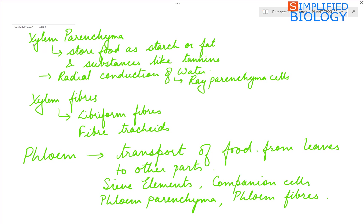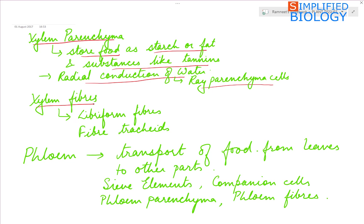Xylem parenchyma are the parenchymatous cells associated with xylem. Their function is to store food in the form of starch or fat, and they even store substances like tannins. They help in radial conduction of water through the ray parenchyma cells. Xylem fibers are the sclerenchymatous fibers associated with xylem, and they are of two types: Libriform fibers and Fiber tracheids.